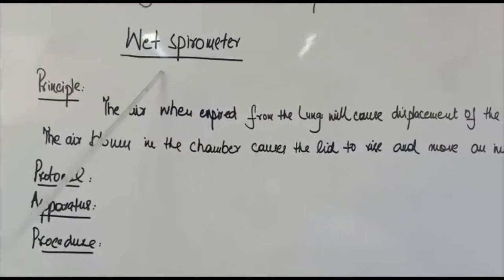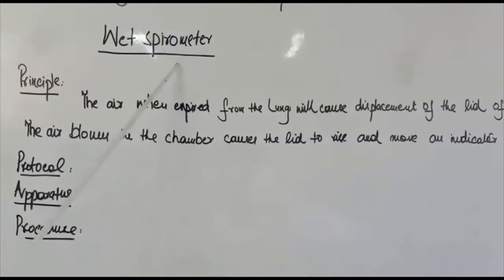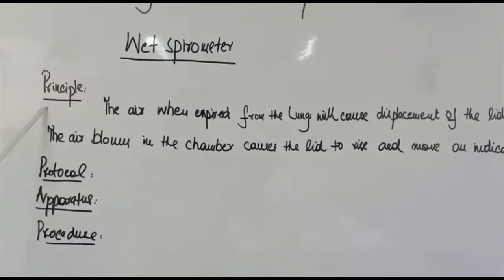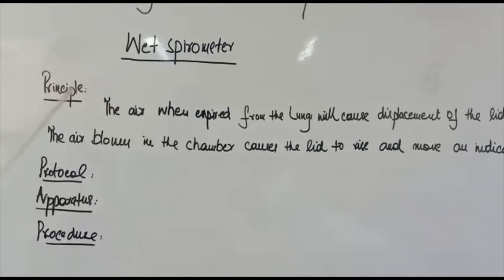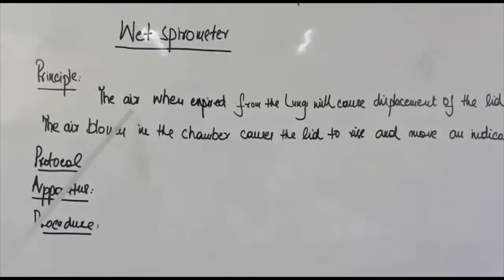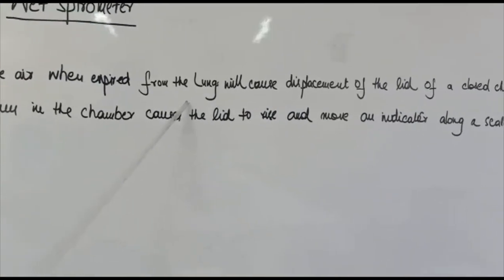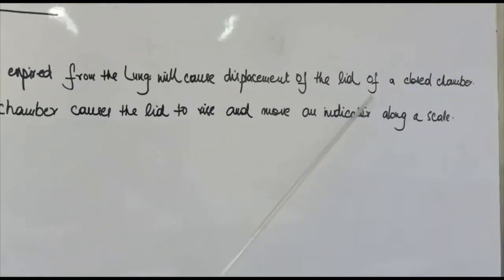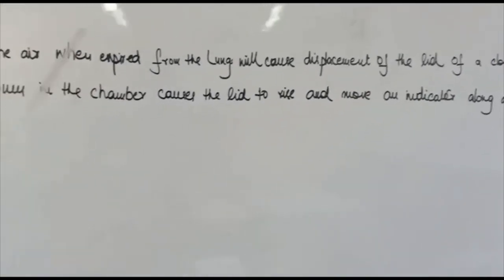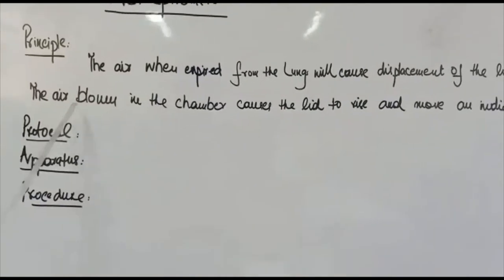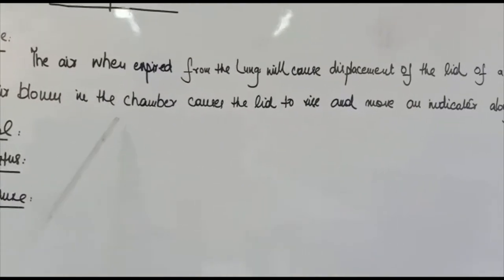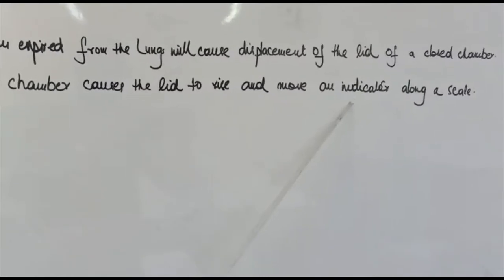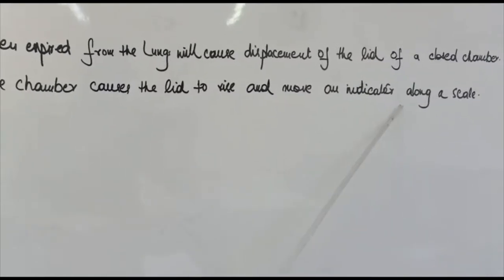The wet spirometer is also known as the student spirometer or simple spirometer. The principle of our practical is: the air when expired from the lungs will cause displacement of the lid of a closed chamber. The air blown into the chamber causes the lid to rise and move an indicator along a scale.